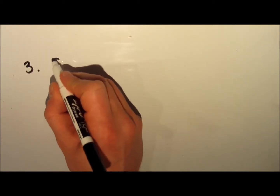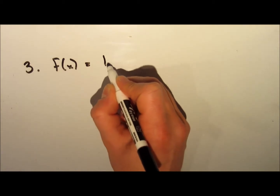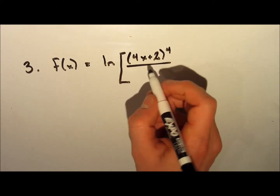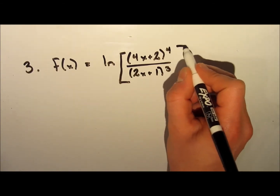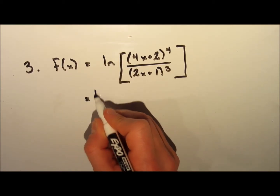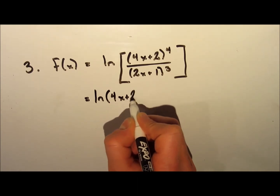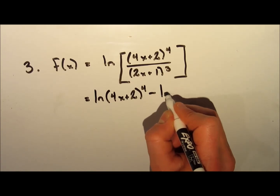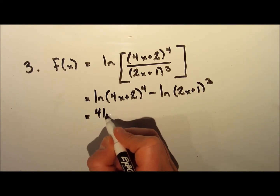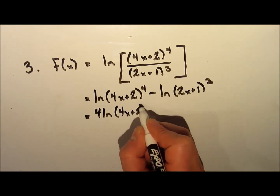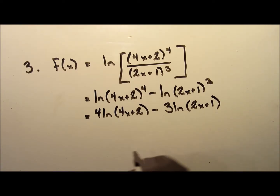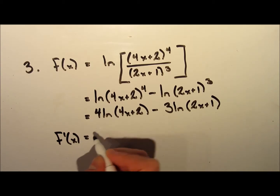Now let's try a tougher one. The function is f(x) equals ln of (4x plus 2) to the exponent 4, divided by (2x plus 1) to the exponent 3. To take this derivative, we first rewrite an equivalent form. We separate the terms: ln of (4x plus 2) to the 4th minus ln of (2x plus 1) to the 3rd. Then we bring the exponents out as constants: 4 times ln(4x plus 2) minus 3 times ln(2x plus 1).